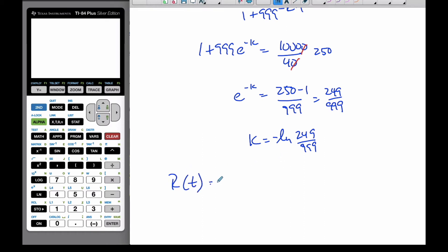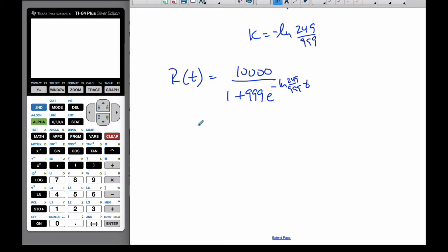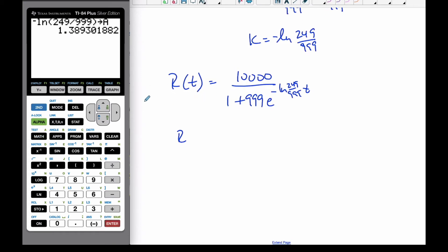My rabbit population time T is my limiting value of 10,000, over 1 plus 999 E to the negative LN 249 over 999 T. And so, if I put this value into my calculator, I'm going to go negative, natural logarithm of 249, divide 999, and I'm going to store that into my A value. So, this is my A value. So, now, I have my, I can easily work with my model. I typed it in here already, you can see I've already pre-loaded it in, and so now I'm ready to go.